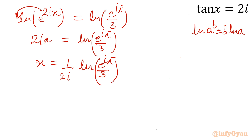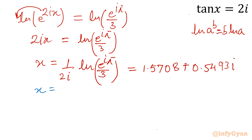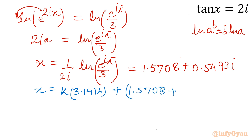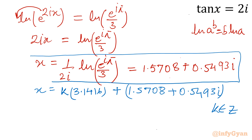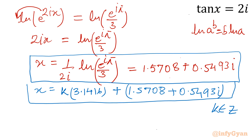Evaluating this expression gives the principal solution x ≈ 1.5708 + 0.54935i. For the general solution, since the left hand side has tan x with period π, we write x = kπ + 1.5708 + 0.5493i, where k belongs to the integers. I hope you liked this video — this is the method for solving complex trigonometric or exponential equations. Thank you for watching; don't forget to like, share, and subscribe.